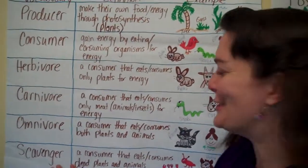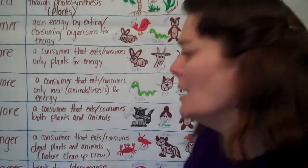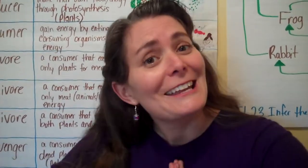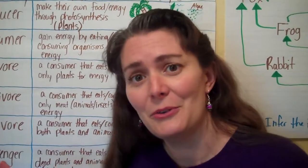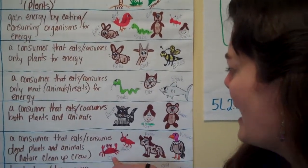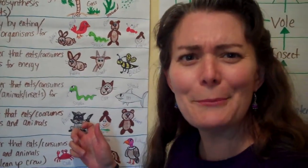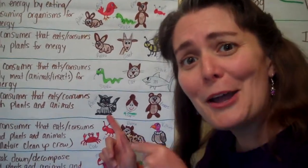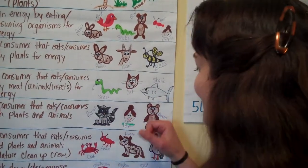Scavengers are a type of consumer that eats or consumes dead plants and animals — they're nature's cleanup crew. We love scavengers because they keep our roadsides and our ecosystem clean and we don't have dead stuff everywhere. Examples include crabs, ants, hyenas, and vultures. And I forgot omnivore examples — this is my version of a raccoon. Raccoons are omnivores, they eat both plants and animals. People are omnivores, and bears are omnivores too.